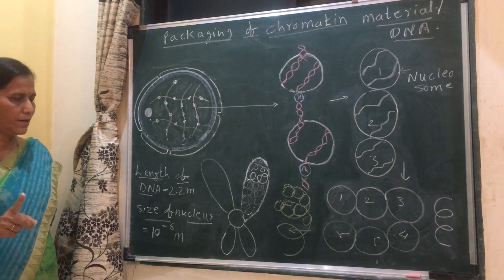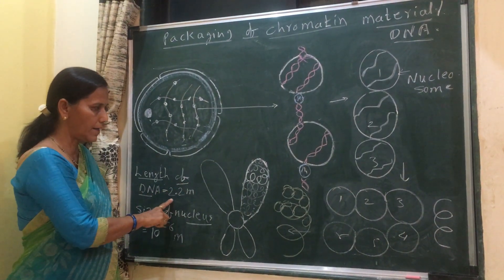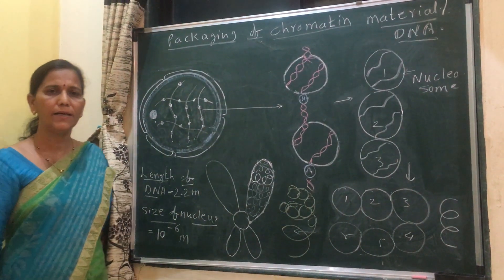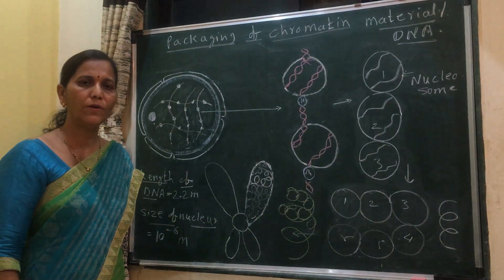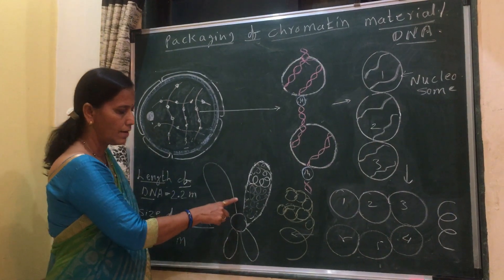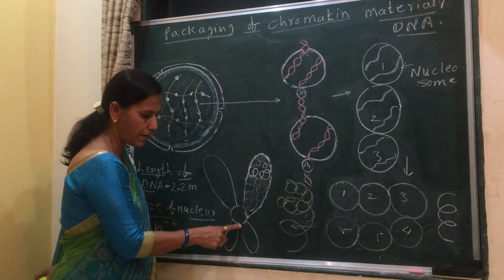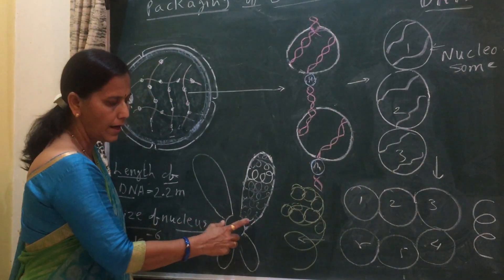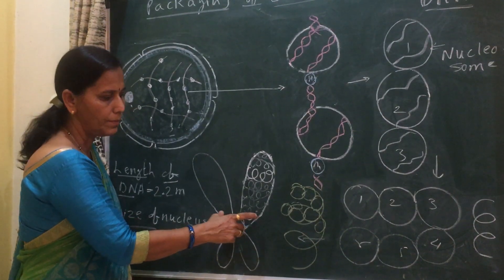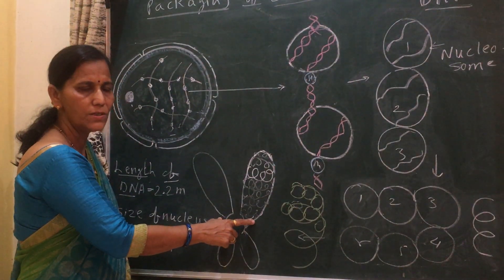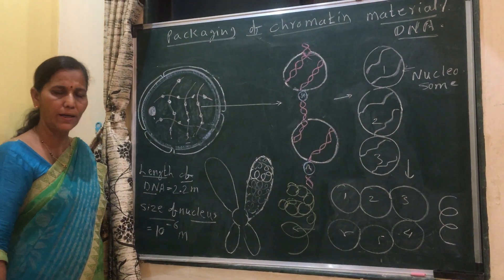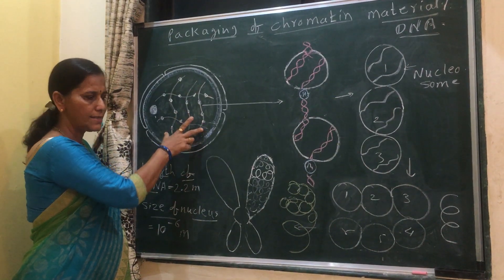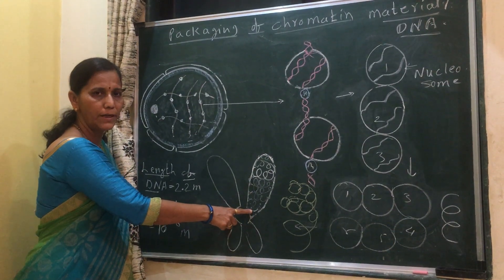Why is packaging essential? First, to accommodate such larger material into the smaller space. Second, due to packaging, there is easy distribution of genetic material to the daughter cell — meaning during mitosis, this chromosome divides at the centromere, and two equal parts of this chromosome occur. So the significance of packaging of chromatin material is to accommodate larger material into smaller space and for easy distribution of genetic material.